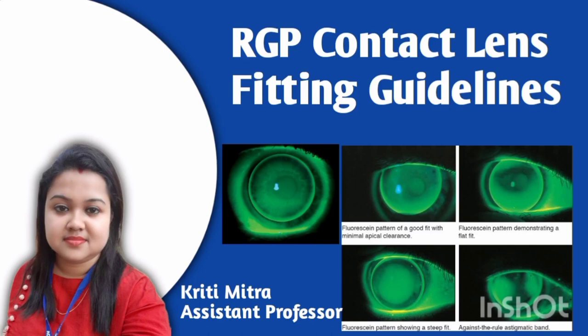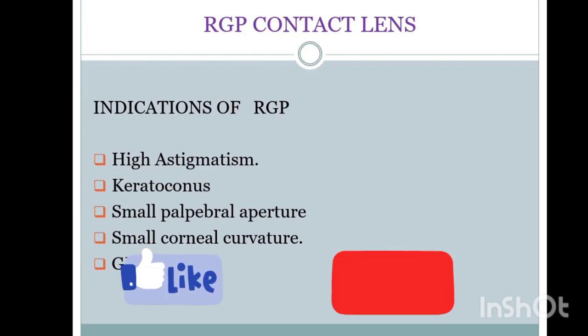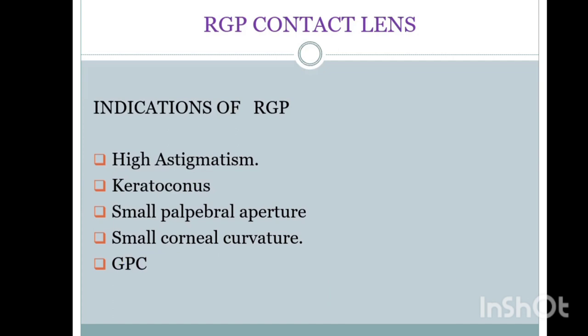Today I am going to discuss the fitting of a RGP contact lens designed specially for keratoconus. How do we fit a RGP contact lens? If the patient has high astigmatism, keratoconus, smaller palpable aperture, small corneal curvature, or is getting recurrent giant papillary conjunctivitis with soft lenses but wants to wear RGP contact lenses — in these cases we prefer a RGP contact lens.